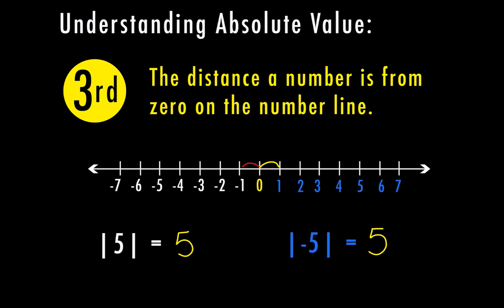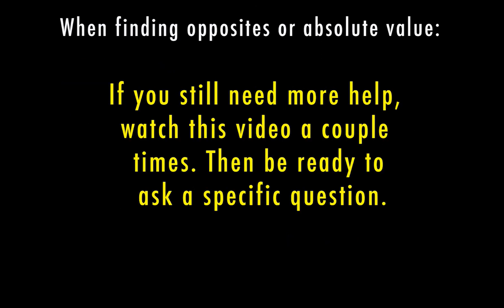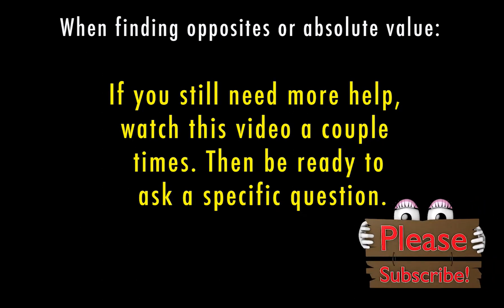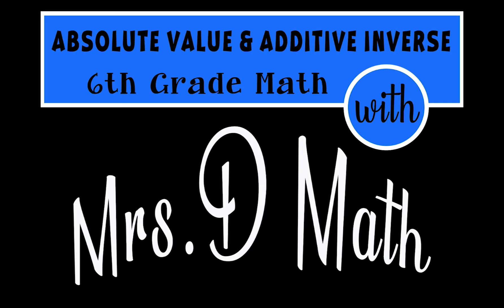These concepts are pretty simple — that really is all there is to it. Whenever you're identifying absolute value, just remember it's talking about the distance that number is from zero, so your answer will never have a negative sign. Also, once you find the absolute value, you don't put the bars on your answer — the absolute value of five is just five. I hope this helped you understand opposites and absolute value. Watch this video again if needed, or be ready to ask specific questions. This is Mrs. D signing off — have a great day. Bye.